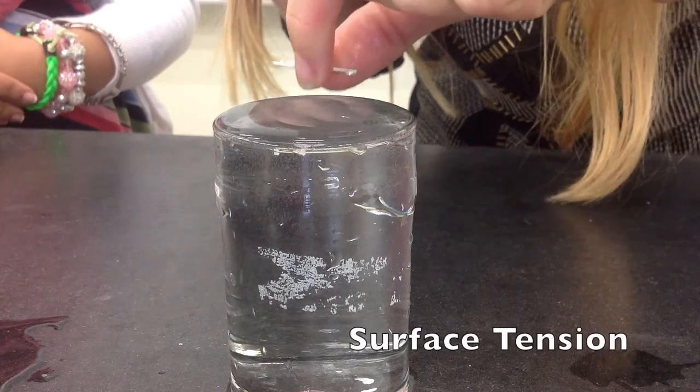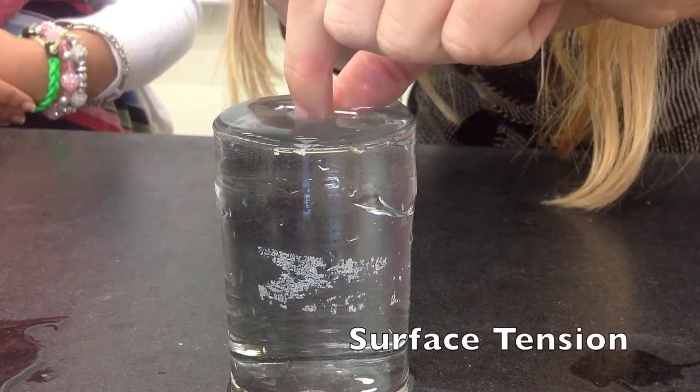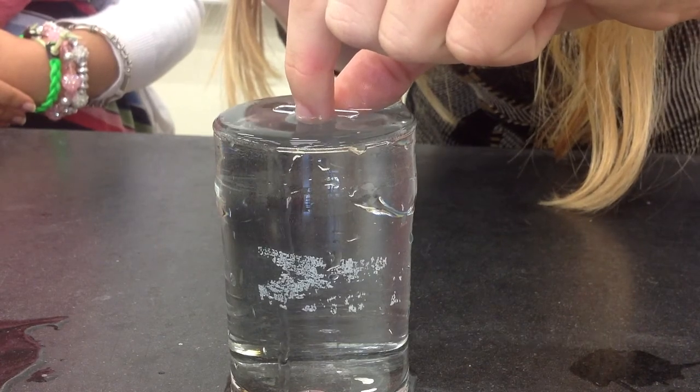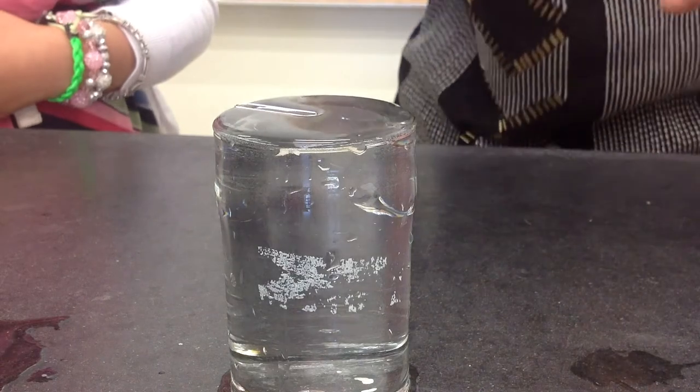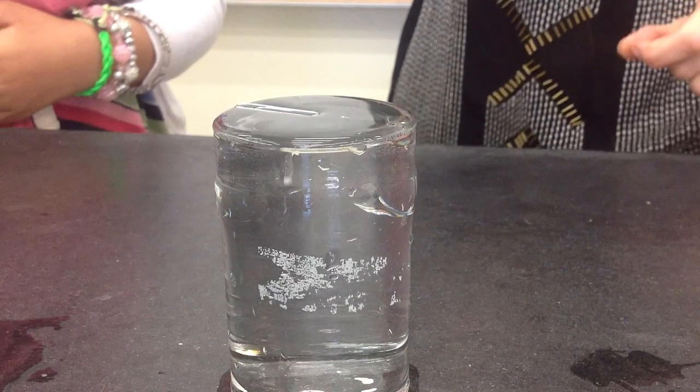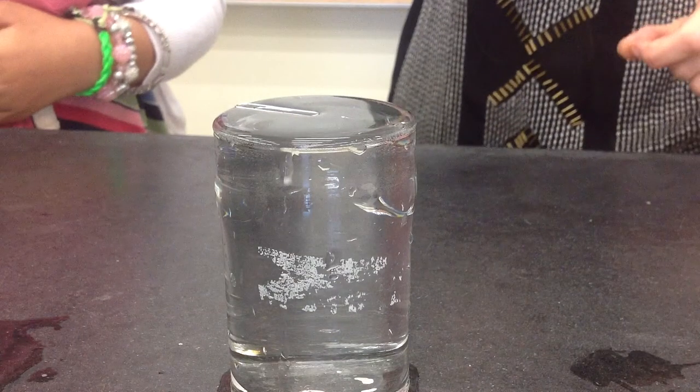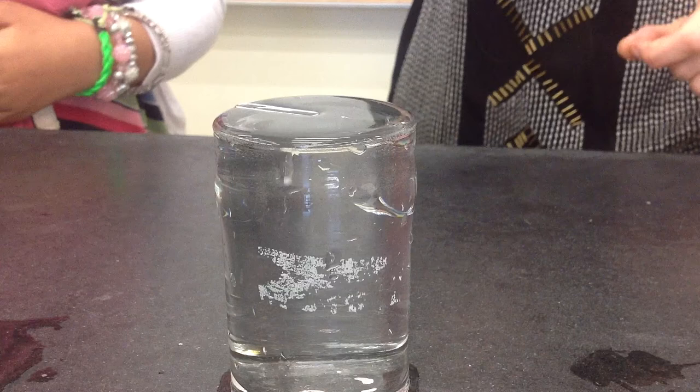Here we have a glass filled with water, and we've added a metal paper clip to the top. Notice that the paper clip doesn't sink. The paper clip does not sink because the water molecules cohere together because of strong intermolecular forces, and it creates a skin-like layer on the surface.